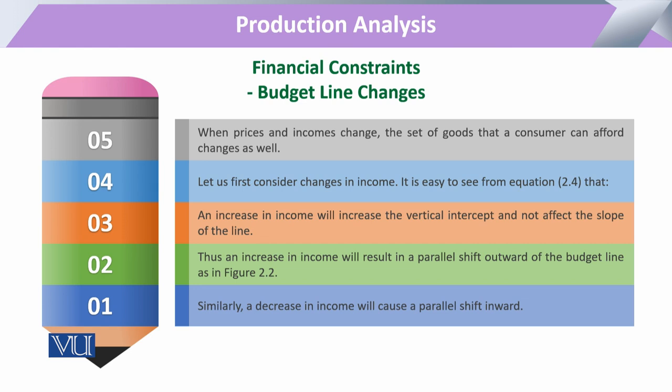We know that this is possible only when either the total budget available to the producer is going to change or the prices of the two factors are going to change. This can also be possible if the two factors, capital and labor, both change their prices, or if one factor's price is changing.